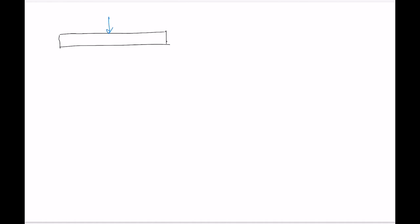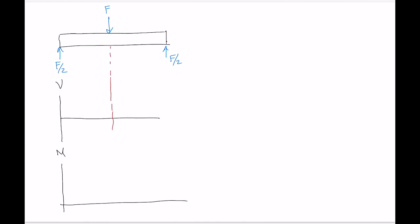Let's look at a beam under a simple loading situation with a rectangular cross-section - just a force in the middle and two support reactions. I'll draw what the shear diagram and moment diagram look like. The shear diagram jumps up F over 2, continues horizontally, drops down, and back along. The moment diagram goes up linearly and back down linearly to zero.